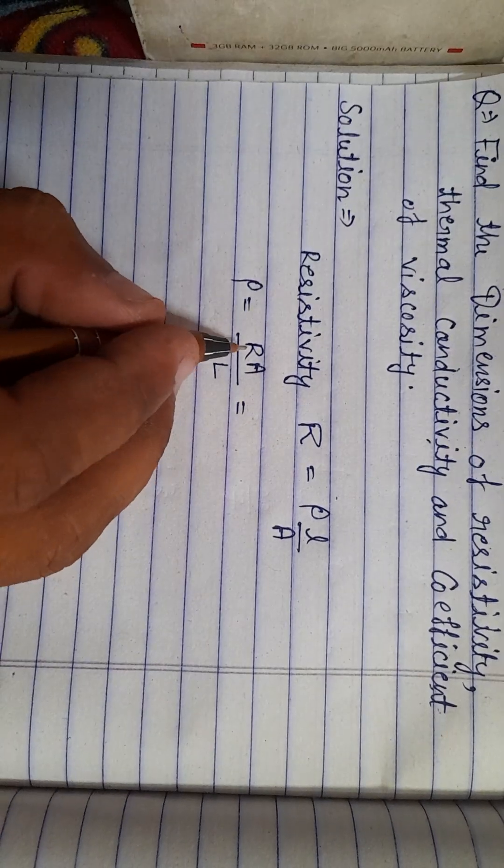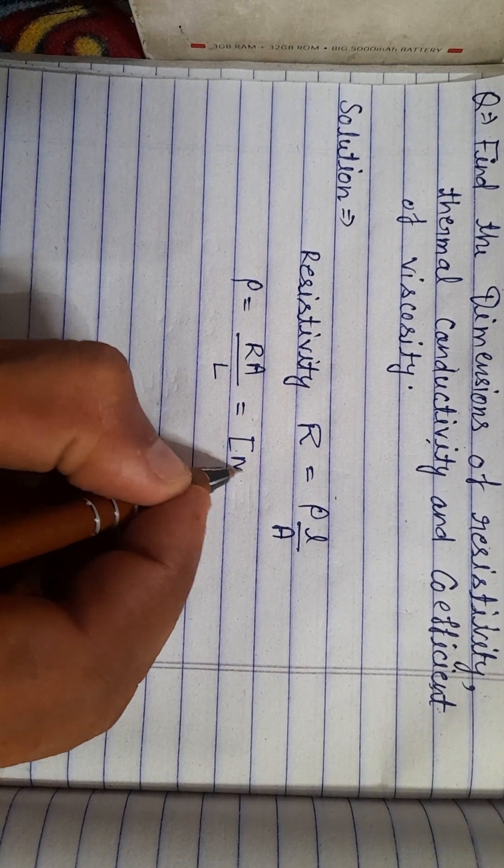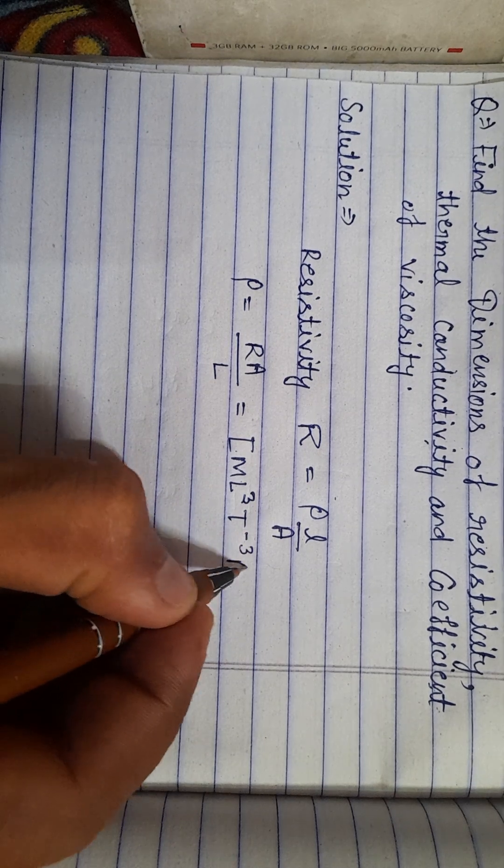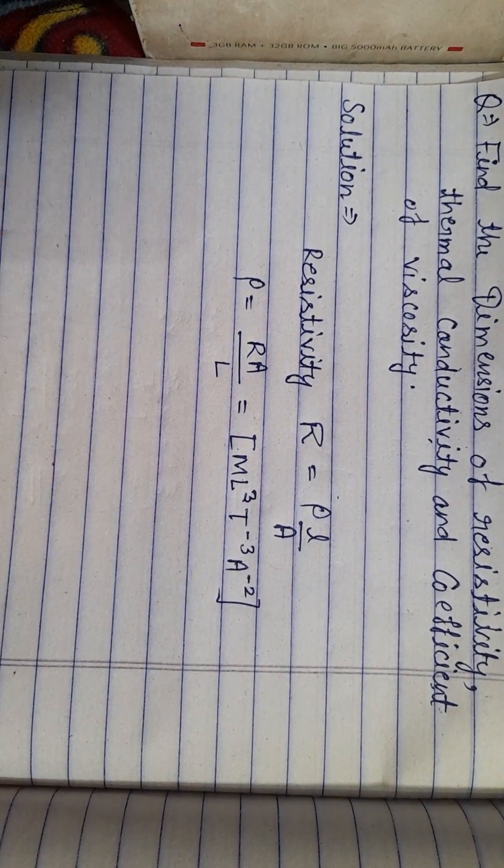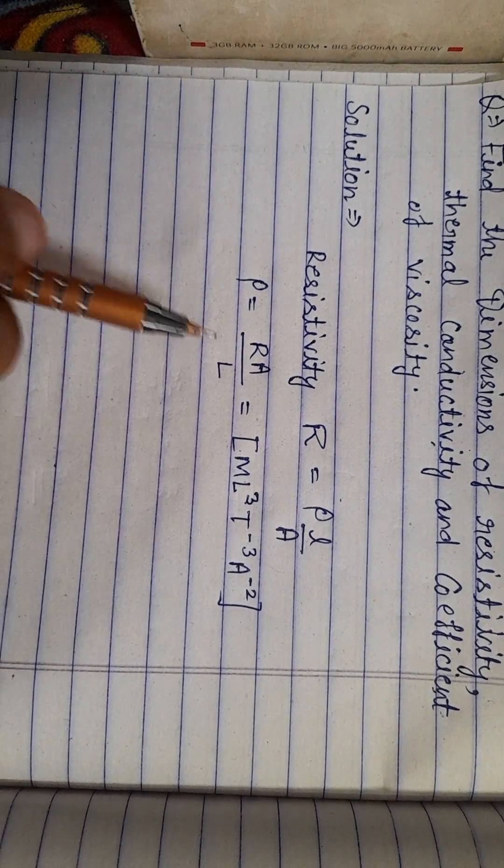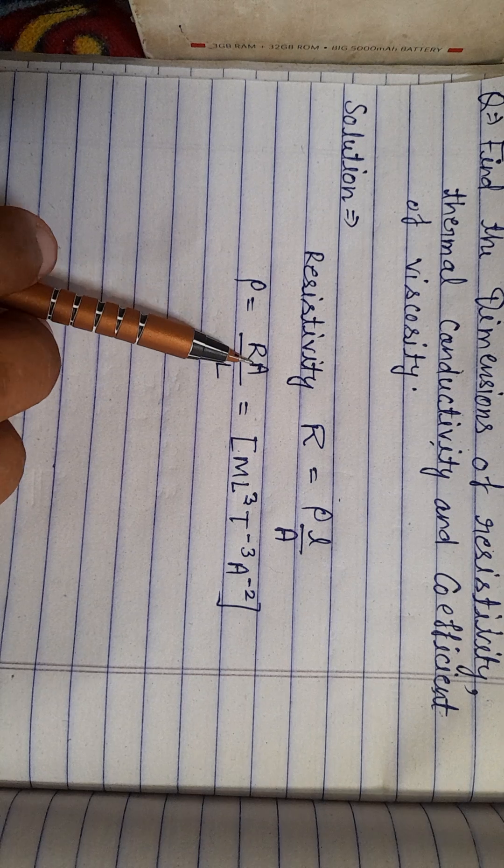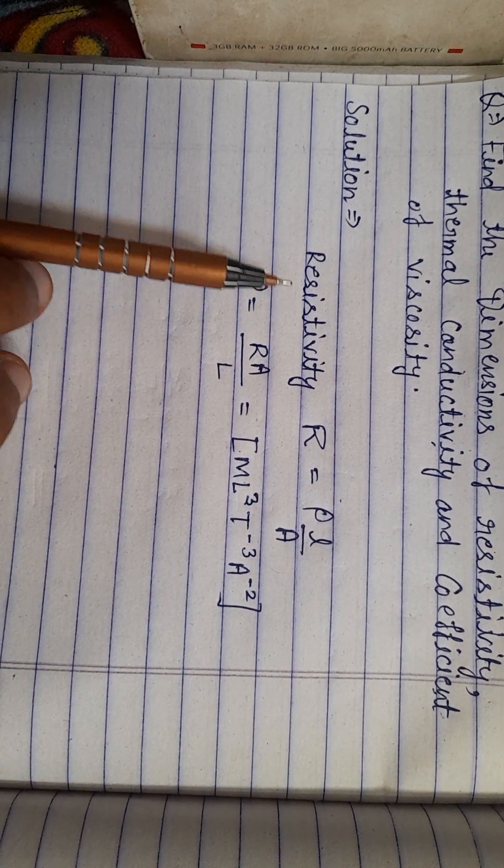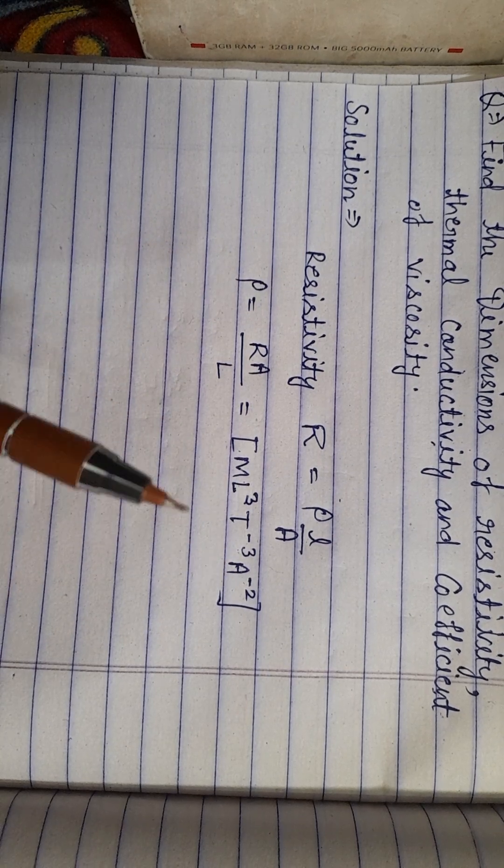Put the dimensions of these. This will be M L cubed T minus 3 A minus 2. The dimension of resistivity will be M L cubed T minus 3 A minus 2.